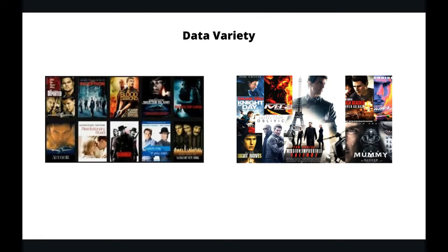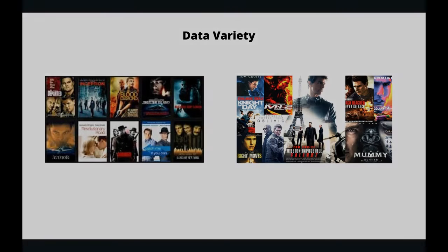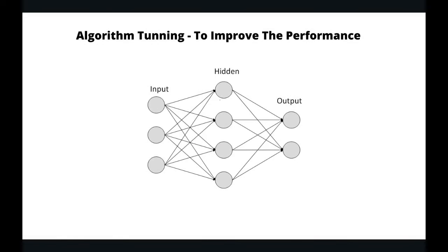The third thing we could have done would have been to feed the artificial neural network with more variety of data. When I say variety, initially we have only trained our system on images. What about if we also train our images on videos of Tom Cruise and Leonardo DiCaprio? This will certainly help improve the accuracy. These are the three things we could have done on the data front.